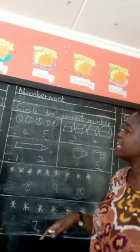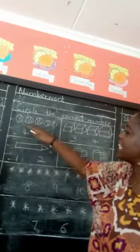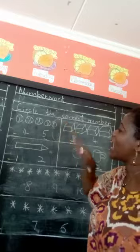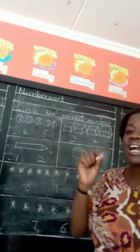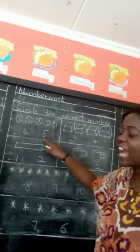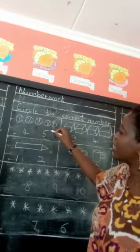Can you count the balls? How many are they? One, two, three, four, five. So we are supposed to circle the correct number. Are these balls four? No. Are they five? Yes. So we are going to circle number five.